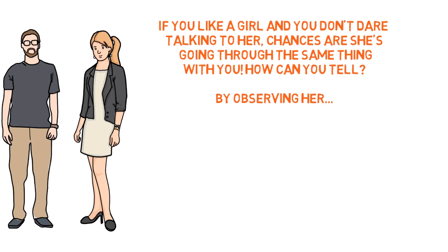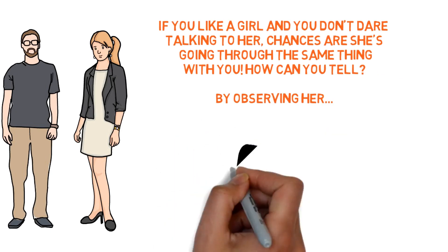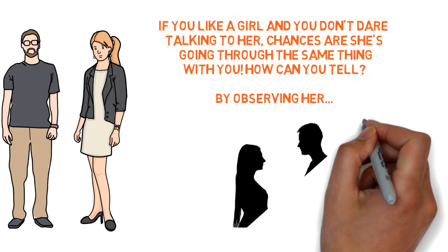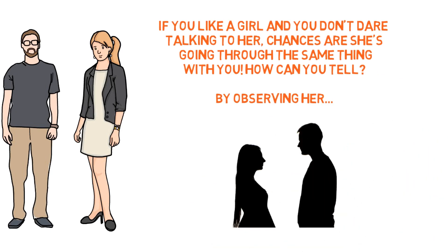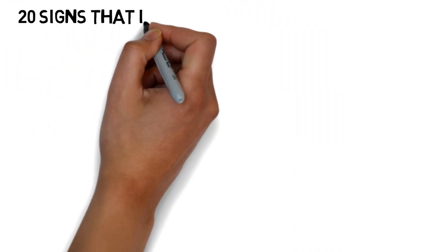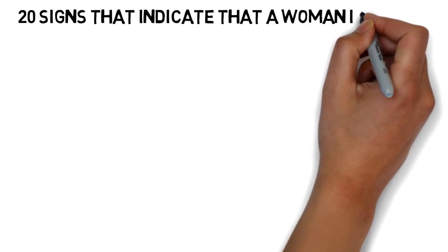We then study the gestures. We pay attention to her behavior, the way she dresses, the way she behaves when you are around. Then you will be able to determine if this girl has a crush on you or not. Stay tuned until the very end of the video to discover the 20 signs that indicate that a woman is in love.